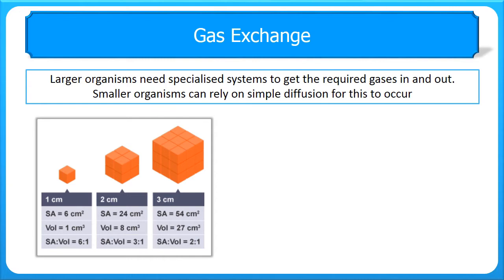Small organisms — single-celled organisms and very small organisms — don't need a specialised system. They can just rely on simple diffusion in order to get the gases in that they require and to get the gases out that they produce as waste. This is because when they are small, they have a large surface area compared to their volume.